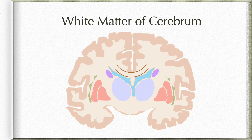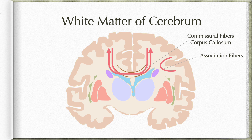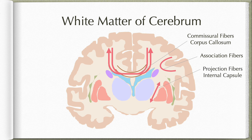The white matter of the cerebrum is made up of three types of fibers. The first set connects one area of a cerebral hemisphere with another area of the same hemisphere — these are called association fibers. The second type connects one area of one cerebral hemisphere with the corresponding area on the opposite hemisphere — these are called commissural fibers. The corpus callosum is one of the largest commissural fiber groups. The third group connects the cerebral cortex with other centers in the central nervous system — these are called projection fibers.